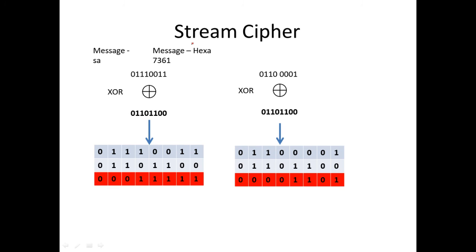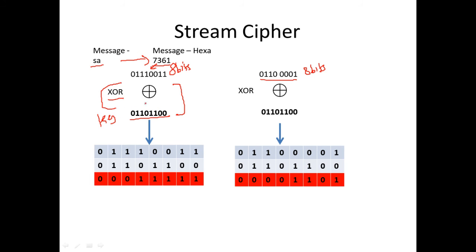For example, taking the message 'SA,' it is converted to a hexadecimal representation and then into an 8-bit stream pattern — 8 bits for each character. In a stream cipher, we take every 8 bits and perform encryption. Here the encryption is simply an XOR with a key, producing the ciphertext.